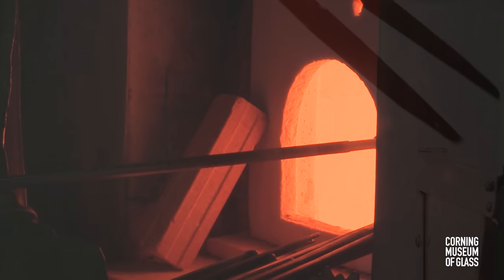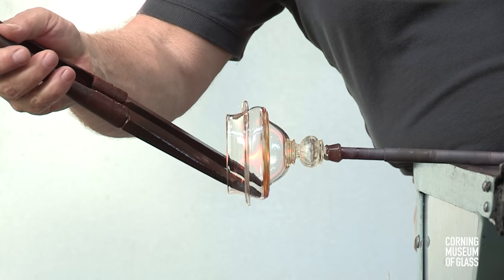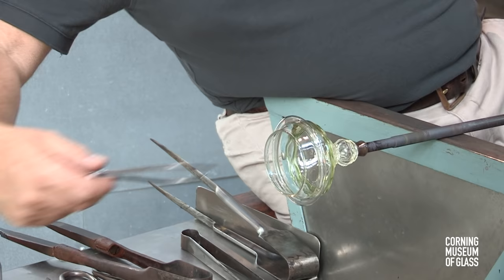The shape of the lid is refined, using the wood jacks. These slide easily over the glass and leave no tool marks. Below the flange, the diameter must be carefully controlled so that it will fit the vessel.